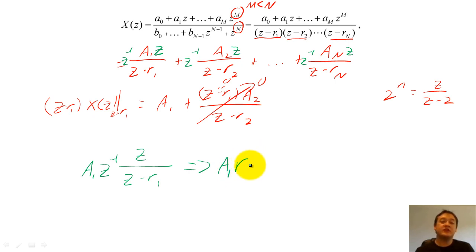By using the lookup table and the delay property, we find that the sequence will equal a summation of delayed exponentials that are zero for n less than one.